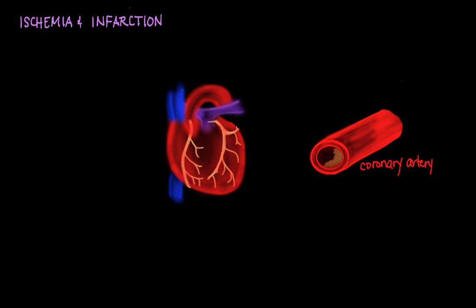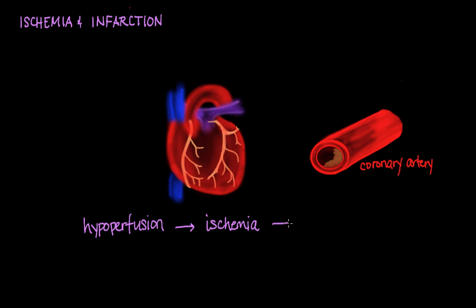Any decrease in blood flow to a particular tissue is called hypoperfusion, generically speaking. If this is prolonged for a certain amount of time and tissues become deprived of the necessary glucose and oxygen to carry out their metabolic processes, then this leads to ischemia. And if this is further prolonged, then you have death of the tissue, and that is called infarction. So you have this progression from hypoperfusion, which can progress to ischemia of the tissue, and then further progress to death or infarction of the tissue.